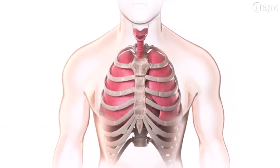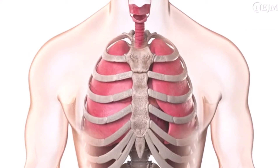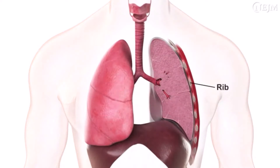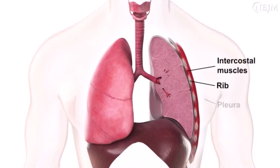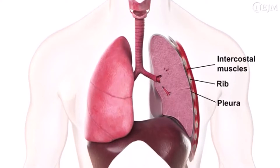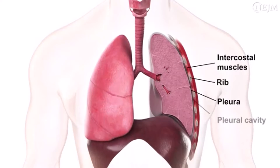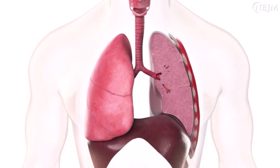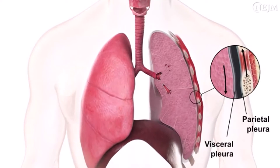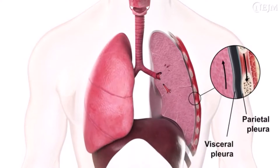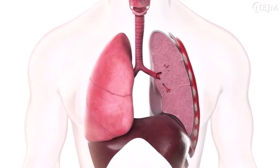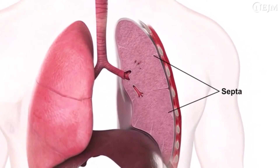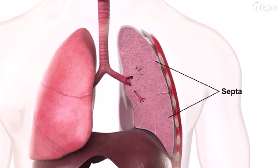The thoracic cavity consists of skin and subcutaneous tissue, the chest wall muscles, the ribs, the intercostal muscles, two pleural laminae — the parietal pleura and the visceral pleura — with the pleural cavity between them and the lungs. During respiration, the two pleural laminae slide against each other, allowing the lungs to expand freely. Interlobular connective tissue septa extend from the visceral pleura deep into the lung to form a delicate support for the alveoli.